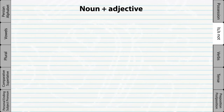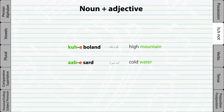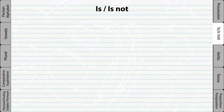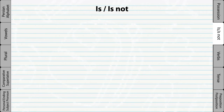Ezafih is also used to connect a noun to an adjective. For example, 'Kuhe Boland' means 'high mountain,' and 'Aabe Sard' means 'cold water.' In literary Persian, Ast and Nist are used to say 'is' and 'is not.' But in colloquial Persian, Ast has been shortened to 'eh,' or 'yeh' after vowels.